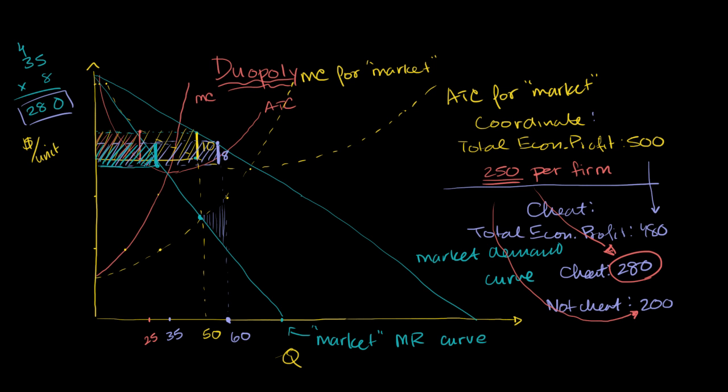In the last video, we saw how there could be an industry that has two firms, a duopoly. And if those two firms coordinate, they could behave as a monopolist and optimize their collective economic profit. In the last video, we saw that would happen when they produced 50 units per period, split equally with 250 units per firm.